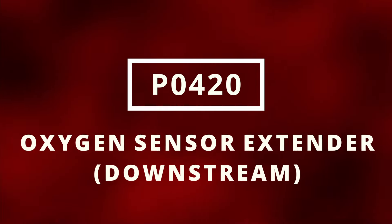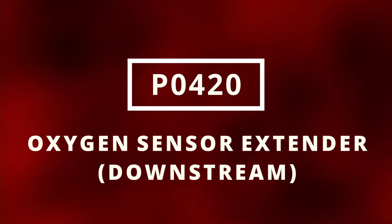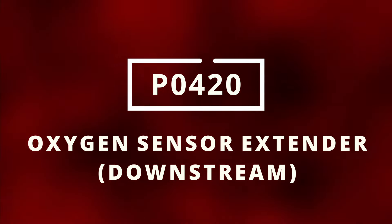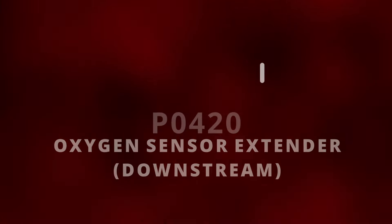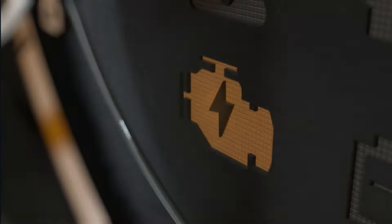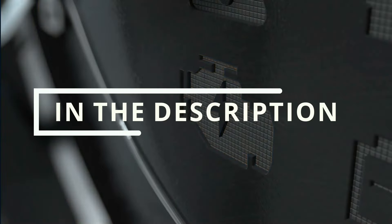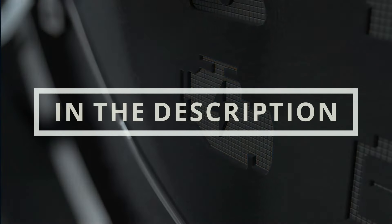Another way to address the P0420 code is to trick the ECM by using an oxygen sensor extender. This method doesn't fix the problem but it will turn off the check engine light. I'll leave a link in the description below.